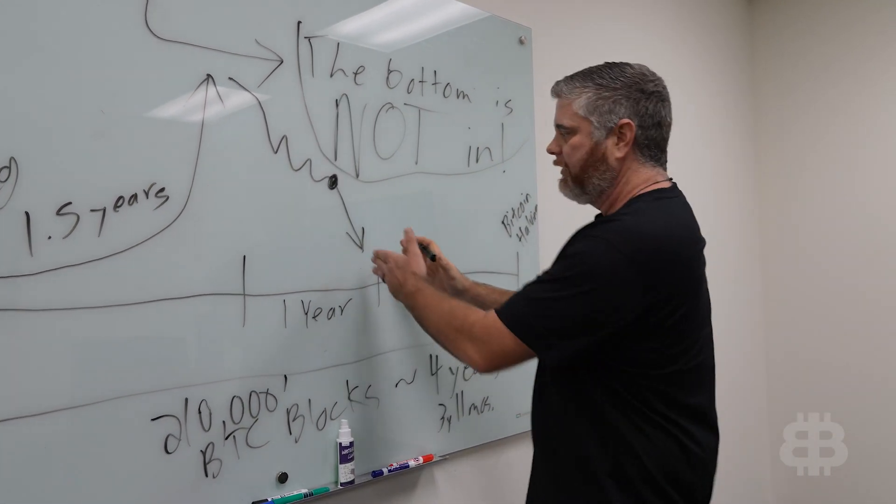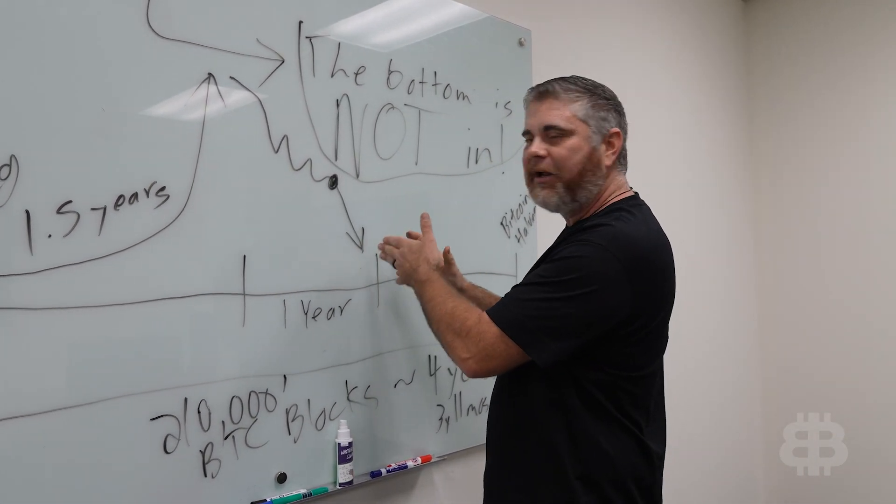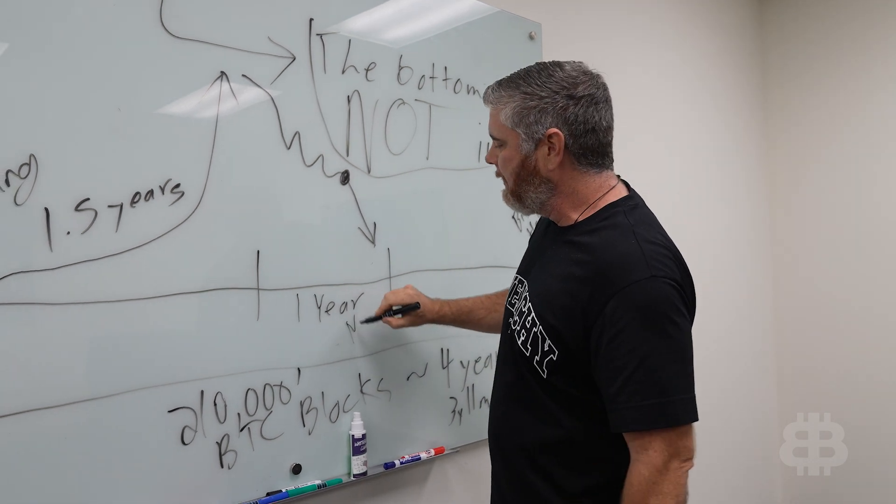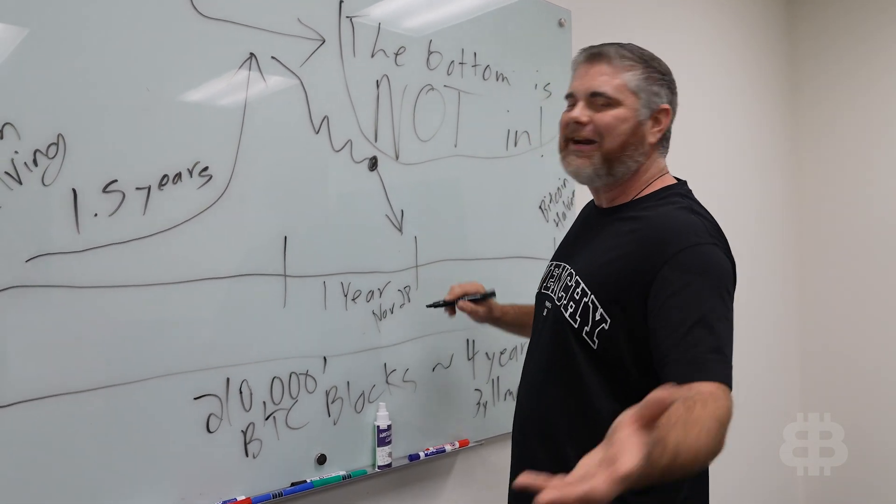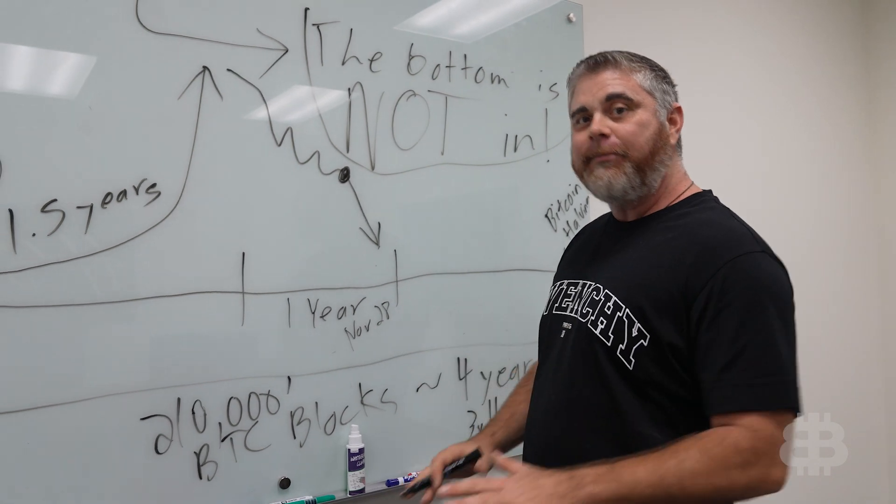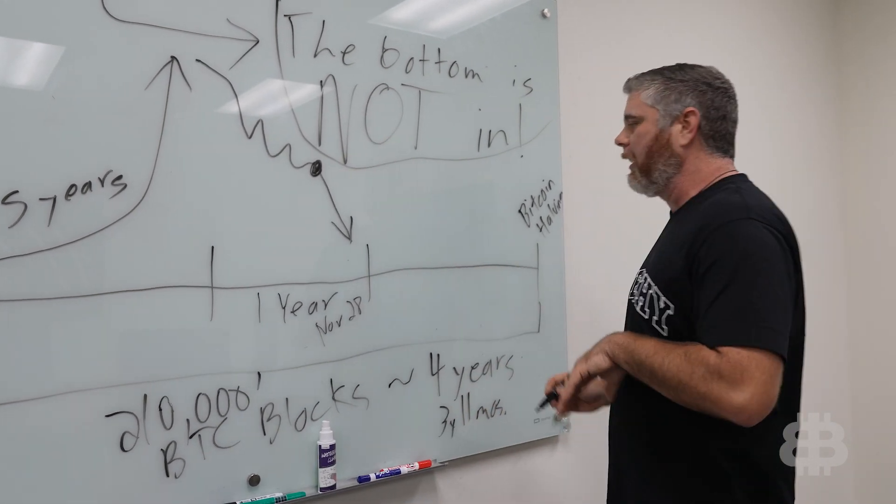Right now, we're about right here during this time frame. Okay? Top was in November. This would be a year later. It would be November again. We're looking at November 28th as approximately. The date's not that important. It's November 28th after the midterm elections. We expect Bitcoin to bottom.